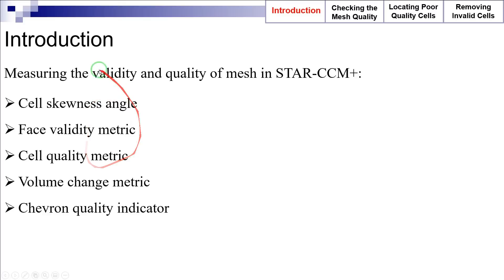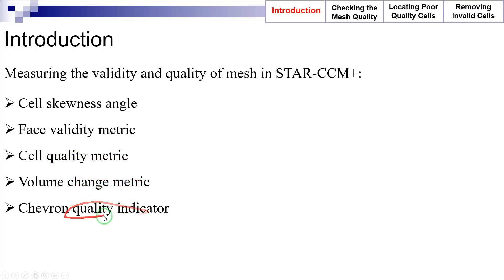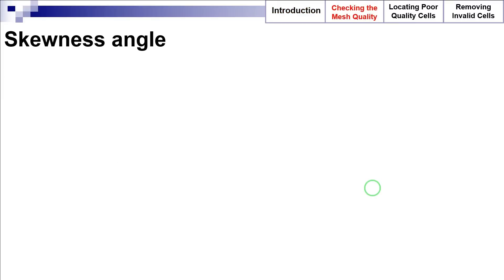In this regard, STAR-CCM+ evaluates the following parameters to measure the validity and quality of the mesh: cell skewness angle, face validity metric, cell quality metric, volume change metric, and chevron quality indicator. In the following sections we are going to see how each of these parameters is defined, and also we're going to learn how we can use these parameters to evaluate the validity and quality of the mesh.